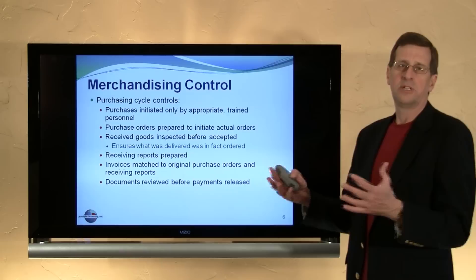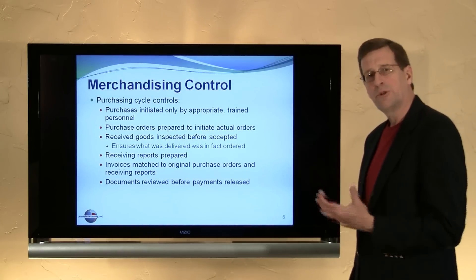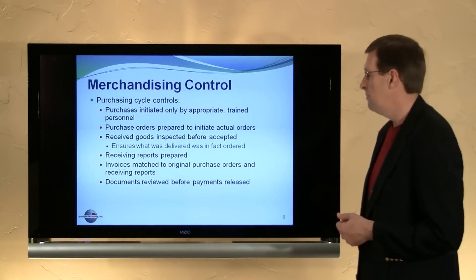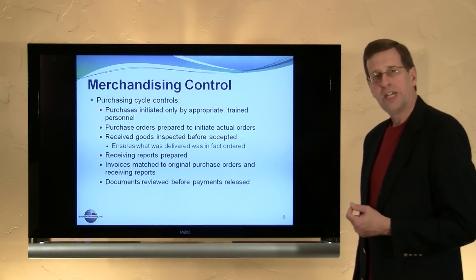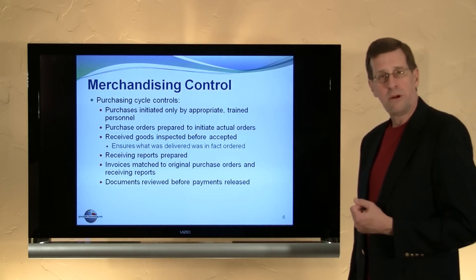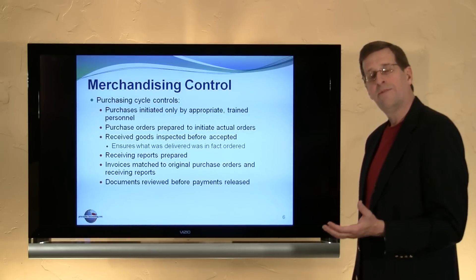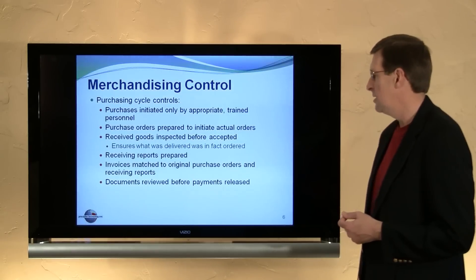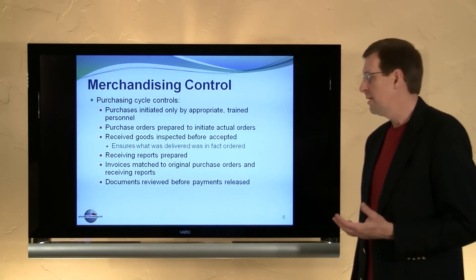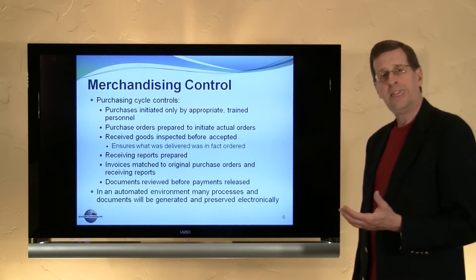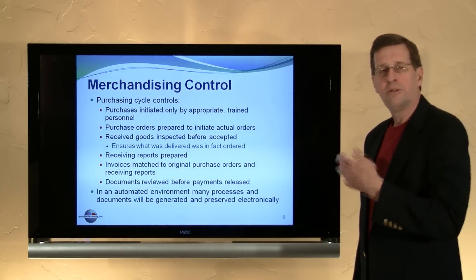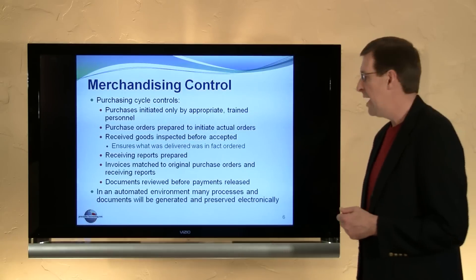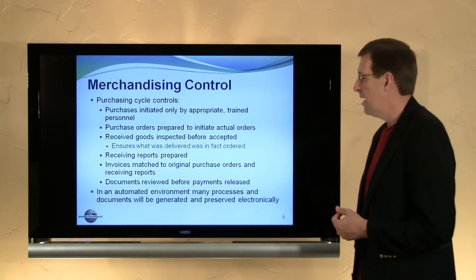Bear in mind the business may have hundreds of employees. Without a system to track this activity, no one would have a way of knowing what to accept as delivery and what was not ordered appropriately. Finally, when an invoice comes in, someone needs to check the math on the invoice, compare it to the terms on the purchase order, and compare that invoice to the receiving report to make sure that what you're about to pay for was indeed received by the business. All of these documents should be reviewed before payment is released. Those documents can be electronic — there's no need for paper — but there needs to be an authorization system within the computer records so that everything is verified as appropriate before payment is issued.